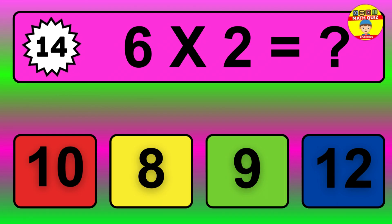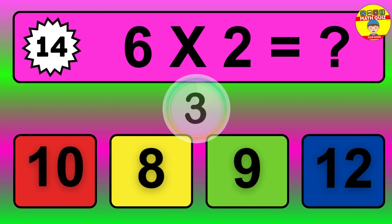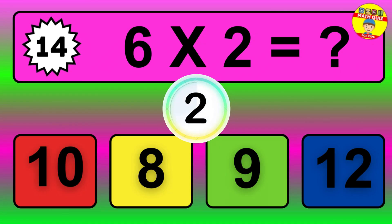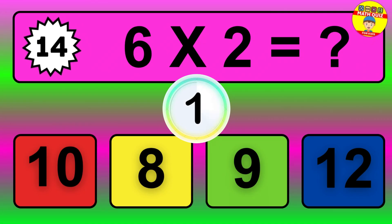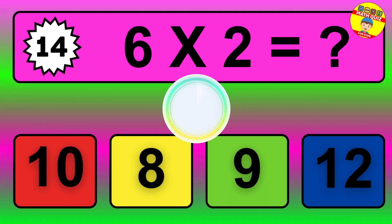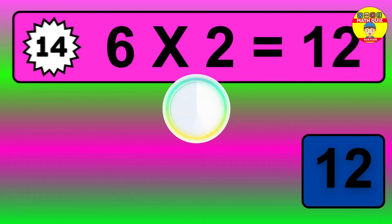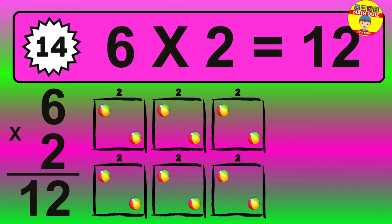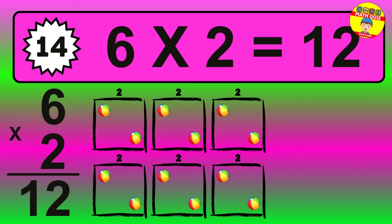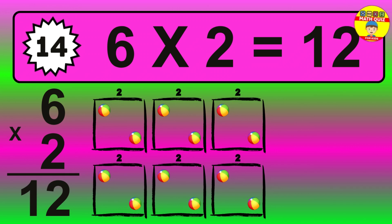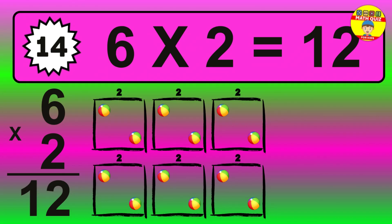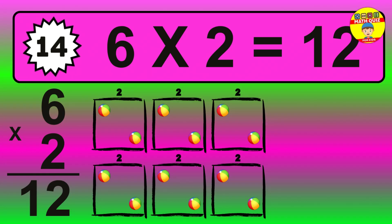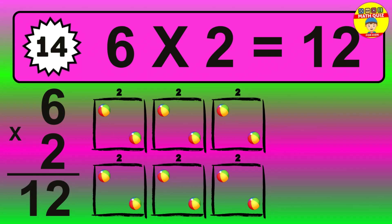Question 14. 6 times 2 equals what? The answer is 6 times 2 is 12. To calculate, we have 6 groups with 2 balls each one. So, how many balls do we have? 12 balls.